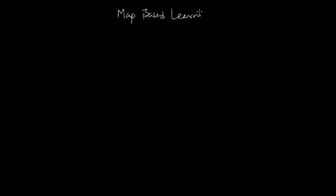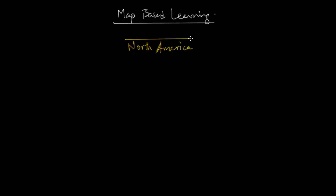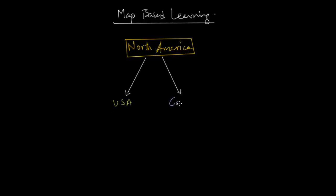Welcome to the playlist of map-based learning. In this video we'll get to know the industrial regions of North America. The industrial output of North America is heavily contributed by two nations — the United States of America and Canada. Let's look at the places in USA first.